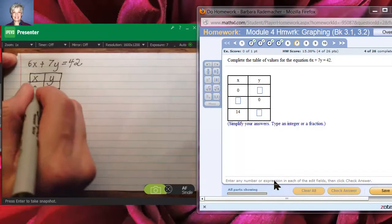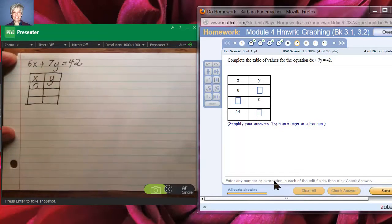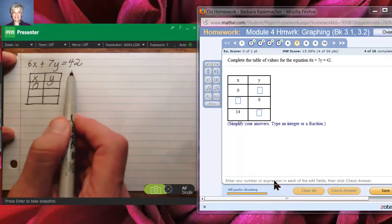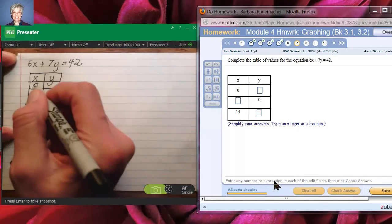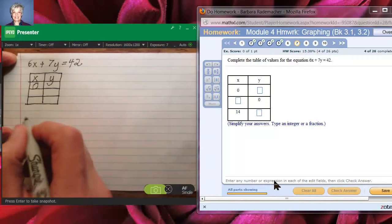For the first point, we're told that the x coordinate is zero and we're being asked to find the y coordinate. This is how you do it. You take the equation you're given, 6x plus 7y equals 42, and you take that zero and you put it in for the x, and then you solve for y.